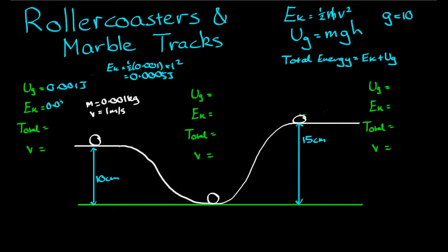So 0.0005 joules. The total energy of this marble at this point is equal to the sum of gravitational potential and kinetic. So that is 0.0015 joules. And the speed that was given to us, that's one meter per second.